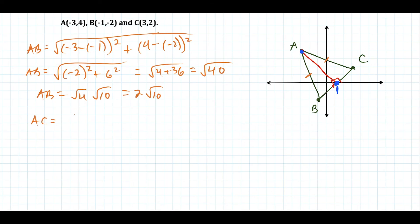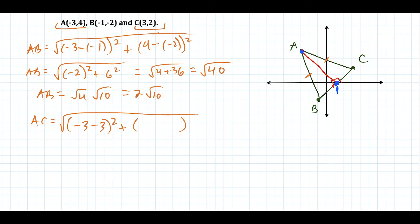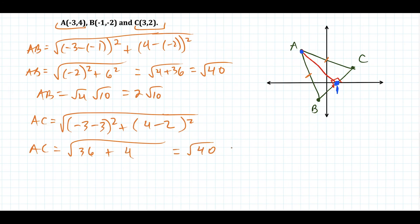Now finding the length of segment AC using the same approach: square root of negative 3 minus 3, squared, plus 4 minus 2, squared. That gives negative 6 squared plus 2 squared, which is 36 plus 4, giving square root of 40, also equal to 2 square root 10. This shows that AB and AC are equal in length, which makes triangle ABC isosceles.